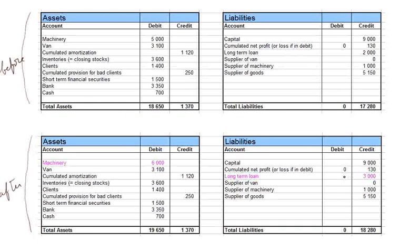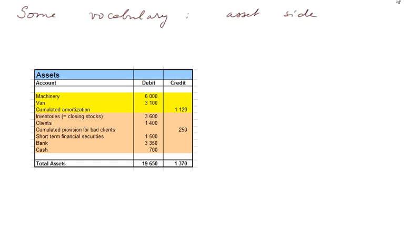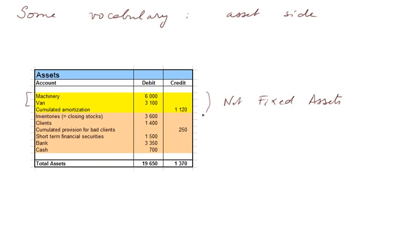Now let's turn to some vocabulary concerning the balance sheet. On the asset side, the top part listing machinery, van, and the so-called cumulated amortization — because there may be amortization from past cycles — this is called the net fixed assets. And if we forget about the amortization, just that part is called the gross fixed assets. Whereas the other part is called the current assets. The names are natural: these are fixed for quite a while, and these turn — they are current.